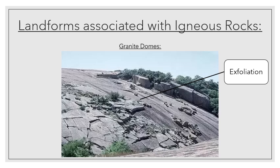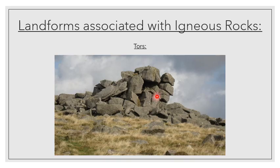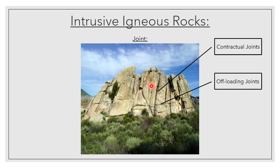So that was a granitic dome. Now let's take a look at the formation of tors. Tors consist of coarse stones stacked on top of each other — these are all granitic stones. You can identify a little offloading joint running along here, and contractual joints running along there. My contractual joints and offloading joints are quite evident in tors, but that still doesn't quite explain how they're formed.